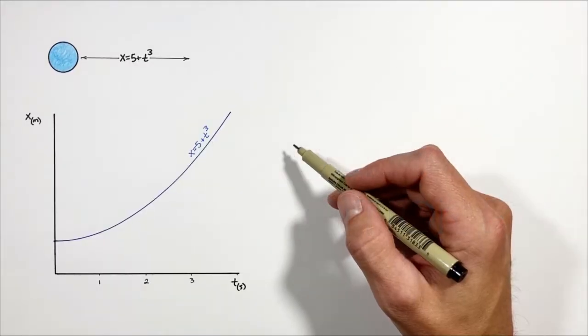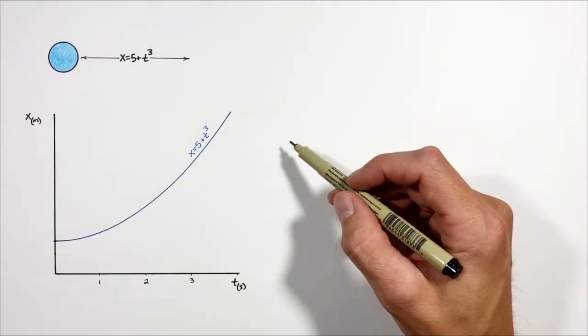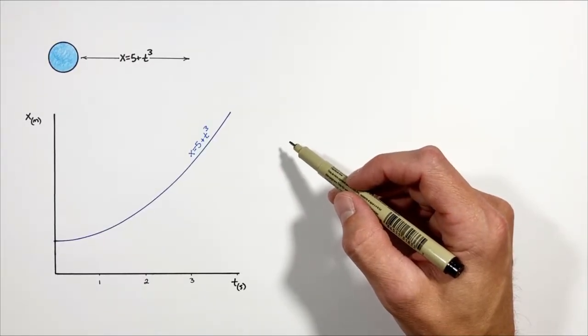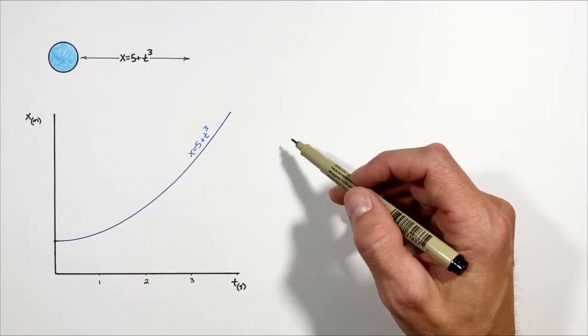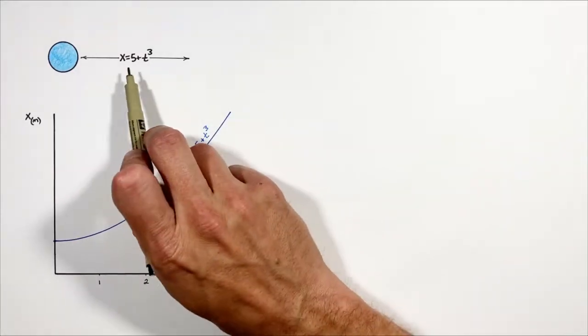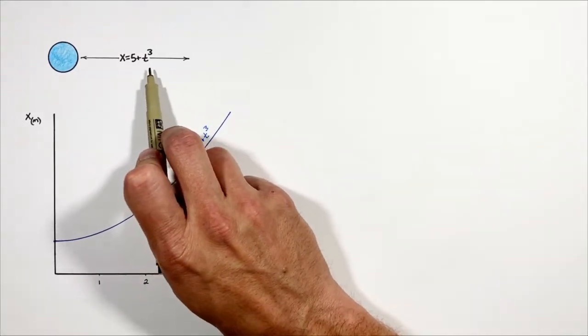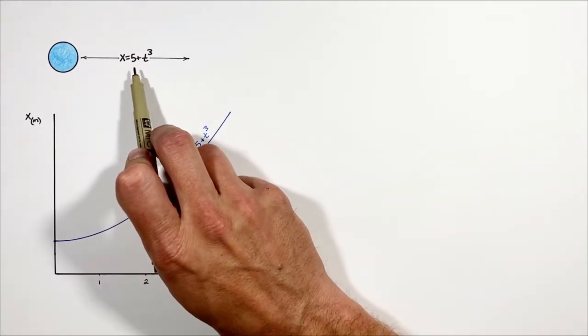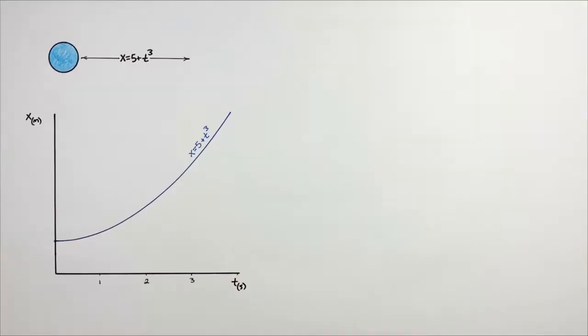Welcome to Integral Physics. Today what I want to do is go through and work out the average and instantaneous velocity of a particle, which is going to move around according to this position function.